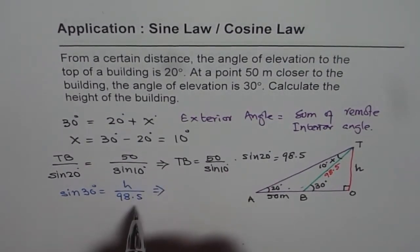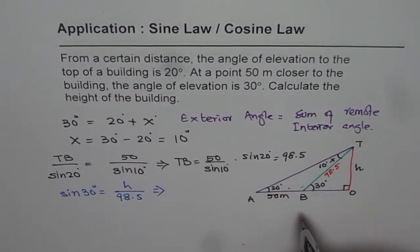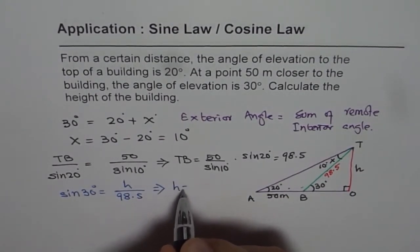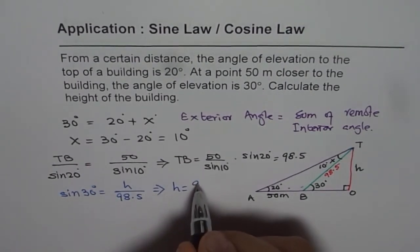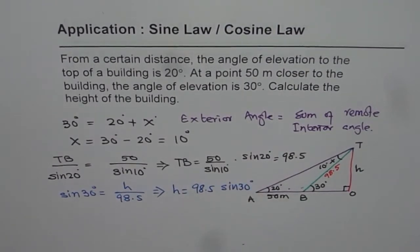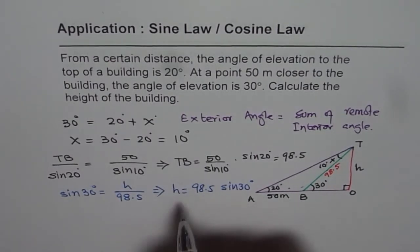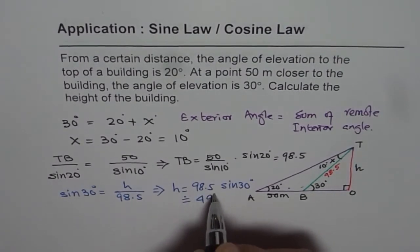Since that will be kind of inaccurate, right? So I'll recommend you to use four decimal places. We'll round our answers to the whole numbers, so this will work actually. So from here we can find what height is. So height is equals to 98.5 times sine of 30 degrees. So we have 98.5 times sine of 30 degrees, that gives us 49.25.